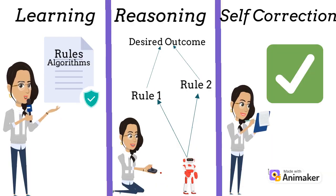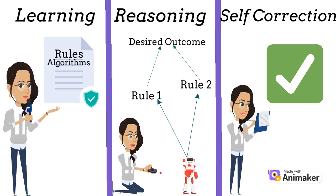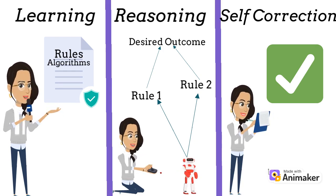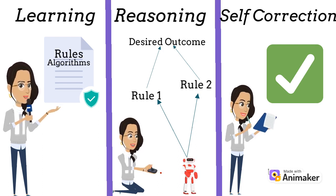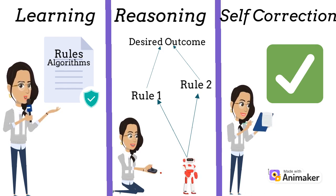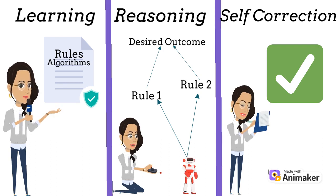The learning process of AI is getting data and making rules based off of that data, called algorithms. These algorithms give the machine step-by-step instructions. The reasoning part is where the bot has to find the right algorithms in order to give the desired response. Finally, the self-correction step makes sure that the bot provides the most accurate response possible.